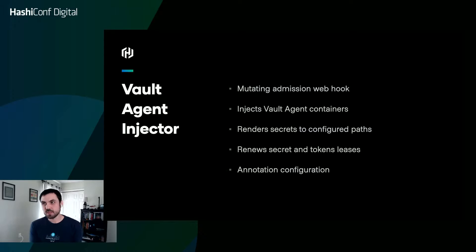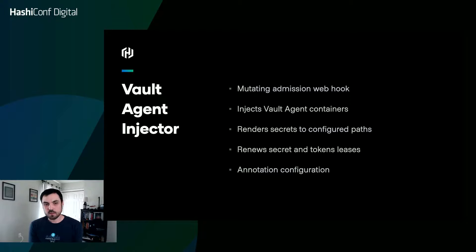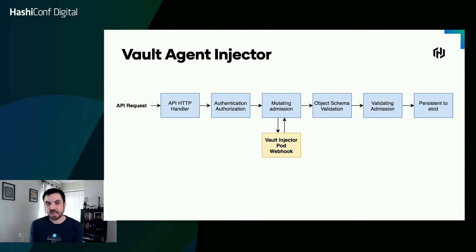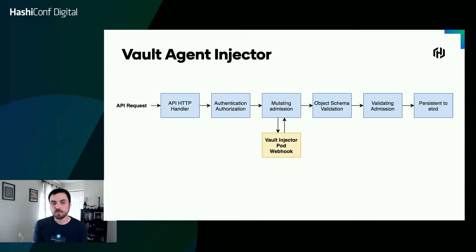Vault agent also renews secrets and the tokens associated with those secrets. If you have a secret that can be renewed, Vault agent will automatically update it so it doesn't expire. If it changes, it will re-render that template, and the tokens or leases will be updated over time. The configuration for the Vault agent injector is done through annotations. Showing the event flow in Kubernetes: you create a pod, send it to Kubernetes, it authenticates the request, then sends it to the mutating admission webhook. We look at the request, find the annotations, inject the Vault agent init and sidecar containers, check it back into Kubernetes, and it eventually gets deployed.